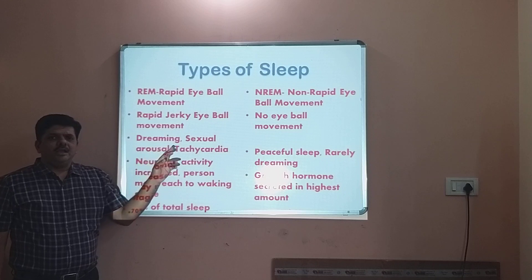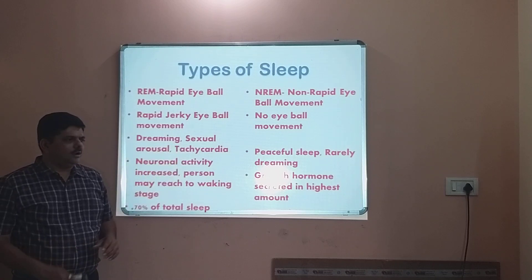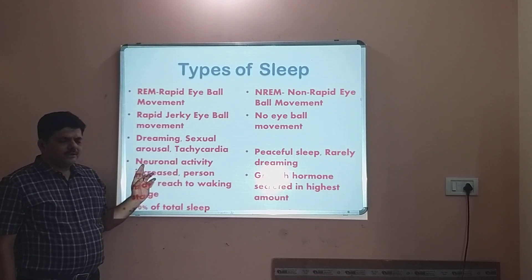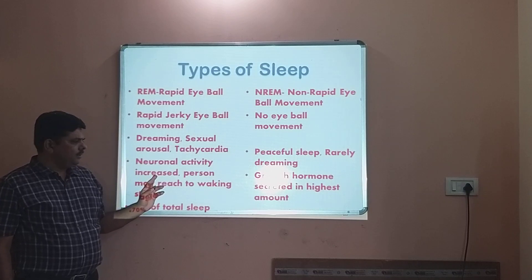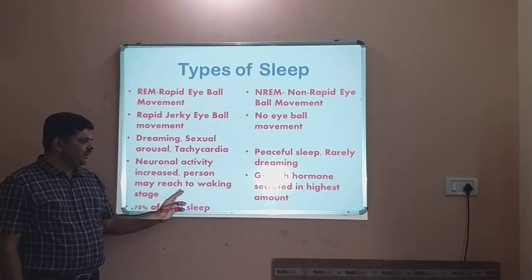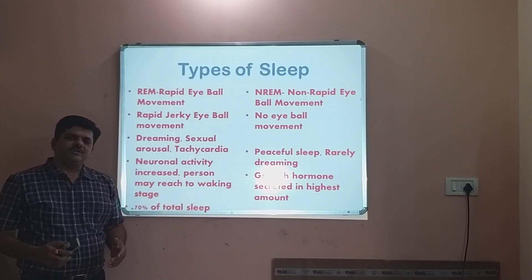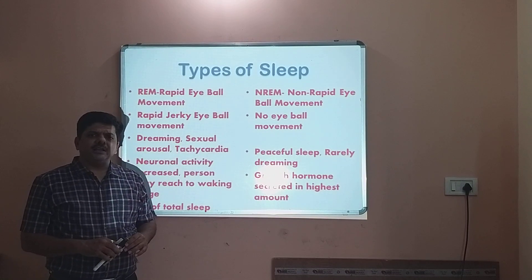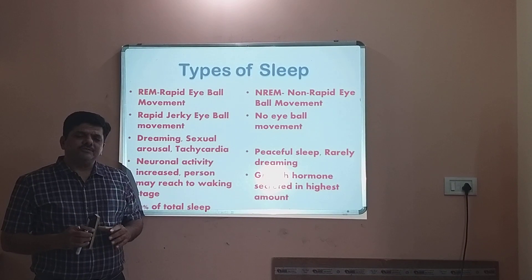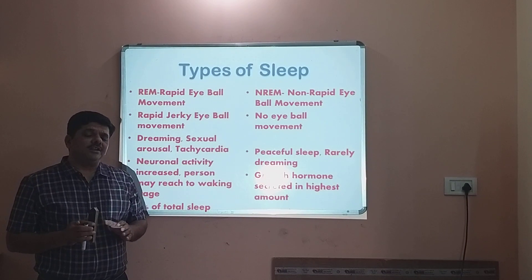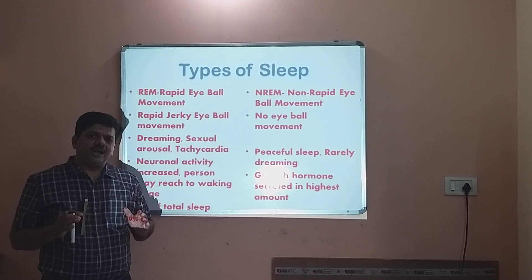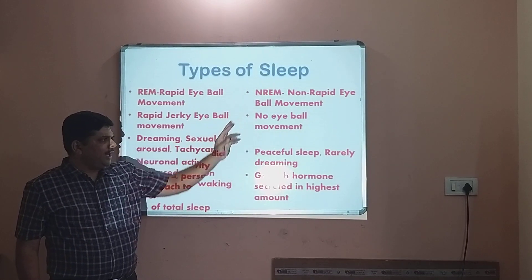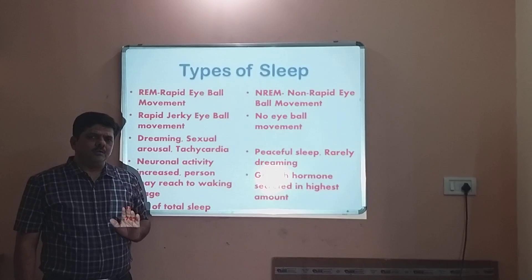REM sleep also produces sexual arousal, tachycardia — heart rate increase — and even neuronal activity is increased in REM sleep, such that the person may reach a near-waking stage. In NREM sleep, it is a deep sleep, very peaceful sleep, with complete muscle relaxation — the whole body is relaxed — and dreaming is rarely found.